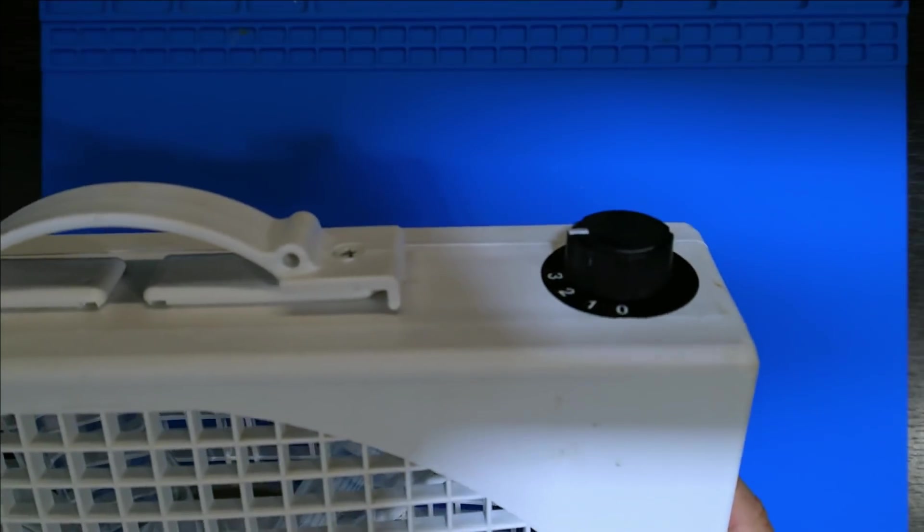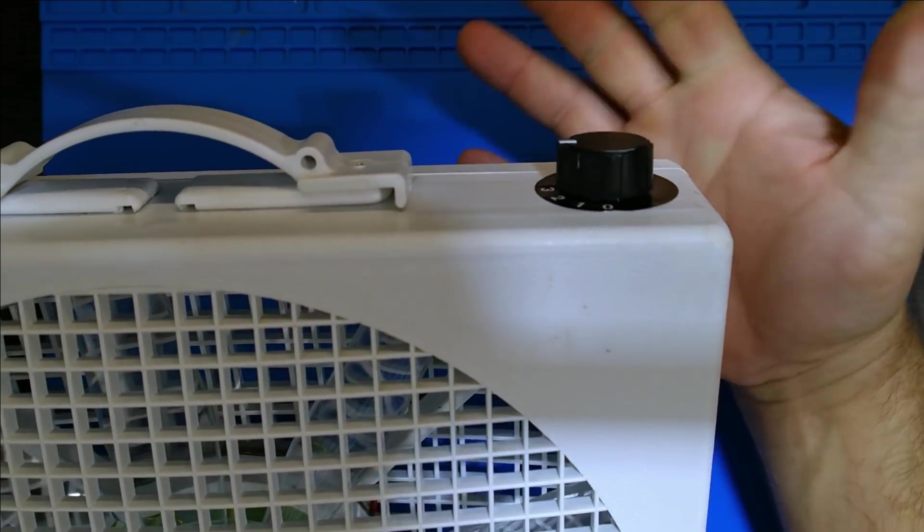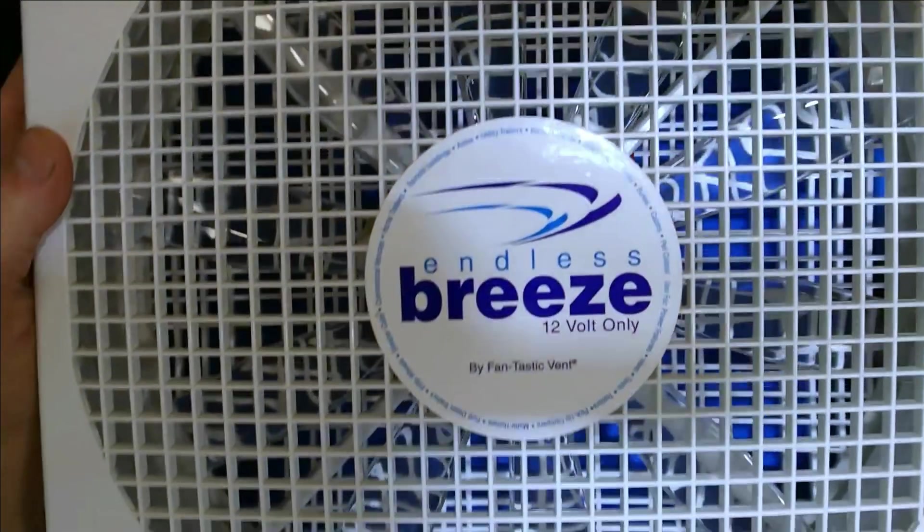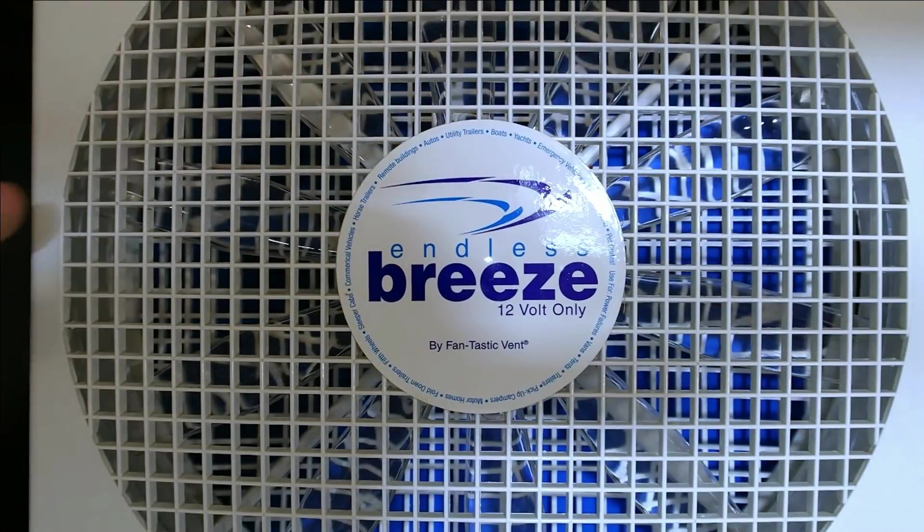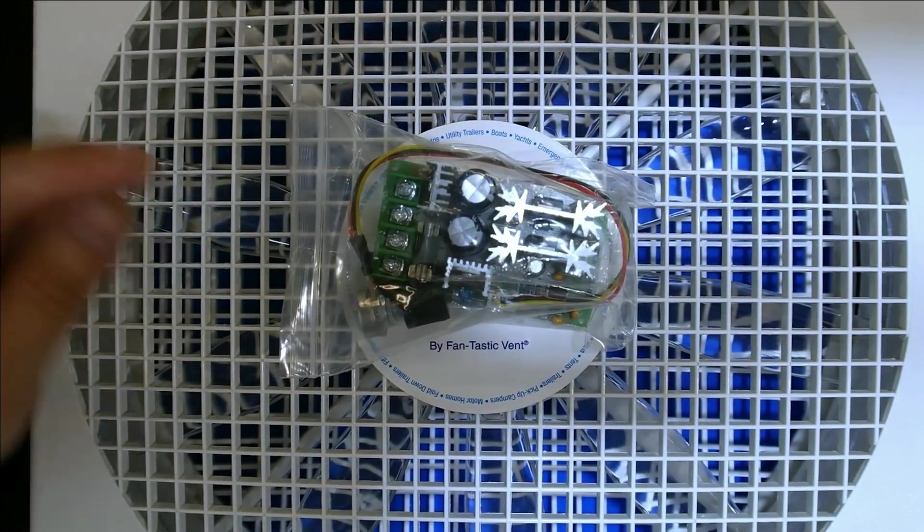The modification we're going to do today is the fan control on it has off, one, two, and three. That's all you got on it, and I like having a little more variability. A lot of people on those forums, the renewable forums, the RV forums, they do the PWM mod, so I'm going to try a slightly different unit out today.